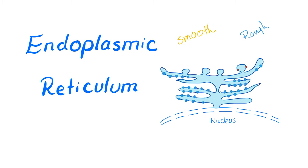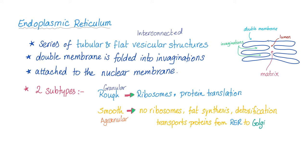First, the endoplasmic reticulum. We divide it into rough endoplasmic reticulum and smooth endoplasmic reticulum. The endoplasmic reticulum is a network of tubular and flat vesicular structures. It has a double membrane which is folded into invaginations.